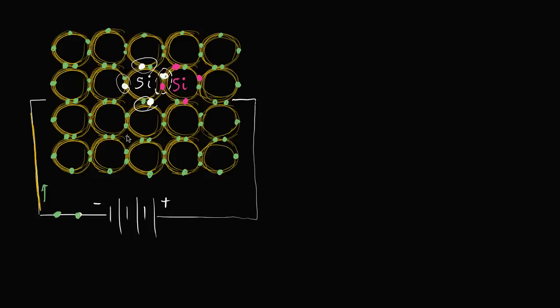So how is this useful when we're building a computer or something? By itself, it's not. What we do is add some impurities to the silicon — we call this process doping. We're just adding a specific impurity to the silicon that lets us conduct electricity and do some interesting things. One common impurity is phosphorus.